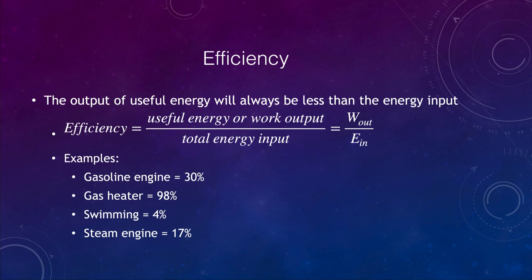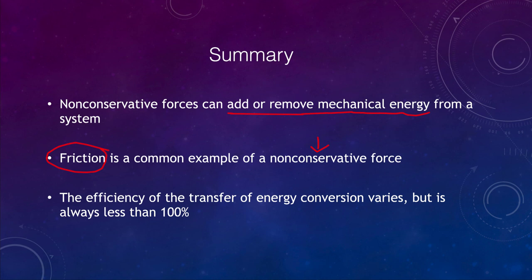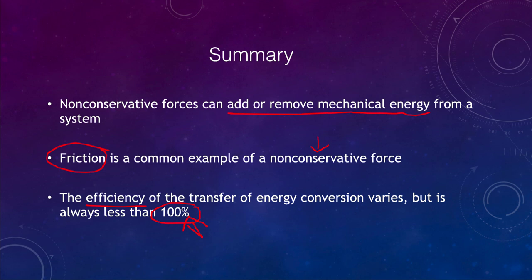To summarize: non-conservative forces can add or remove mechanical energy from a system. A common example is friction, where the path makes a difference — a longer path means more friction and more energy lost. We also looked at efficiency, which varies but is always less than 100% — there is always some energy loss. That completes this lecture on conservation of energy. We'll be back next time for another topic in physical science — have a great day everyone.